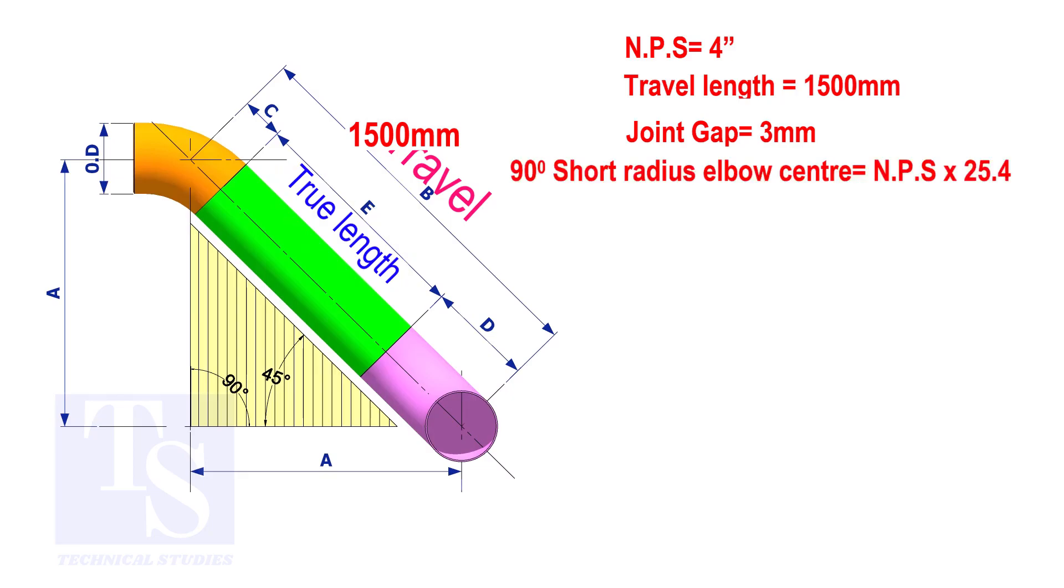To calculate the elbow center of a 90 degree short radius elbow, multiply the nominal pipe size by 25.4. The answer is 101.6 millimeters.